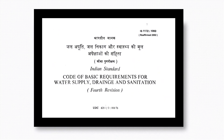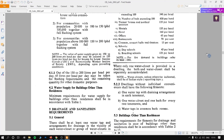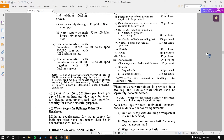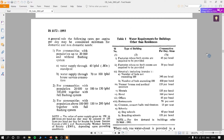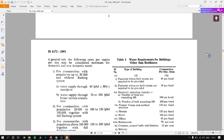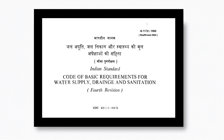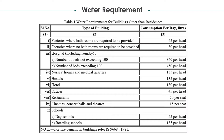Water requirement can be referred to Indian Standard codebook IS 1173:1993. For every type of building, the codebook has the rules and regulations for water supply and water requirement calculation. The codebook can be downloaded from the link in the description below. This is the table of the water requirement per person per day in liters for each type of building other than residences.